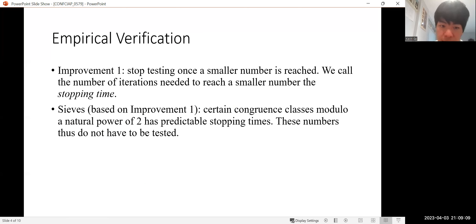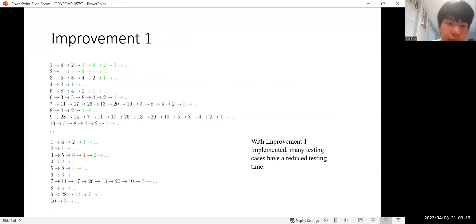We'll have a look at how we can see that certain numbers must reach a smaller number later in this slide deck. So here are some examples of testing with and without Improvement 1 implemented. And as you can see, it reduces a lot of testing iterates, for example, for 9 and for 6.